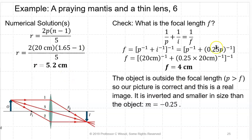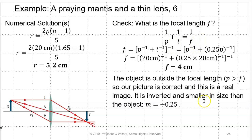Plugging in the numbers — 2 times 20 centimeters times (1.65 minus 1), divided by 5 — R comes out to be 5.2 centimeters. Then using 1 over P plus 1 over I equals 1 over F, with I equal to 0.25P, the focal length ends up being 4 centimeters. The object is outside the focal length: P is 20 cm, which is greater than F = 4 cm. The picture is correct — this is a real image. It is inverted and smaller in size than the object, one-fourth of the linear size of the object.